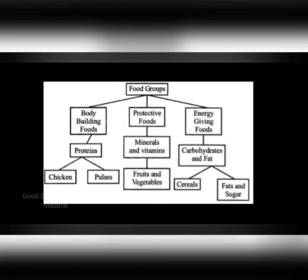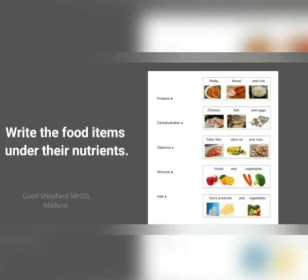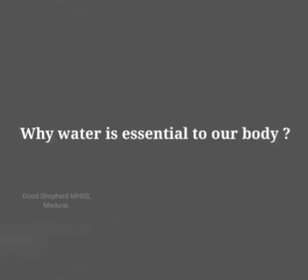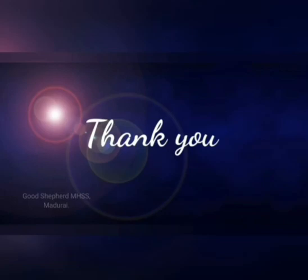So today we learned about energy-giving foods, protective foods and body-building foods. The main nutrients in foods are carbohydrates, fats, vitamins, minerals and proteins. Students, do the following homework. Thank you, students.